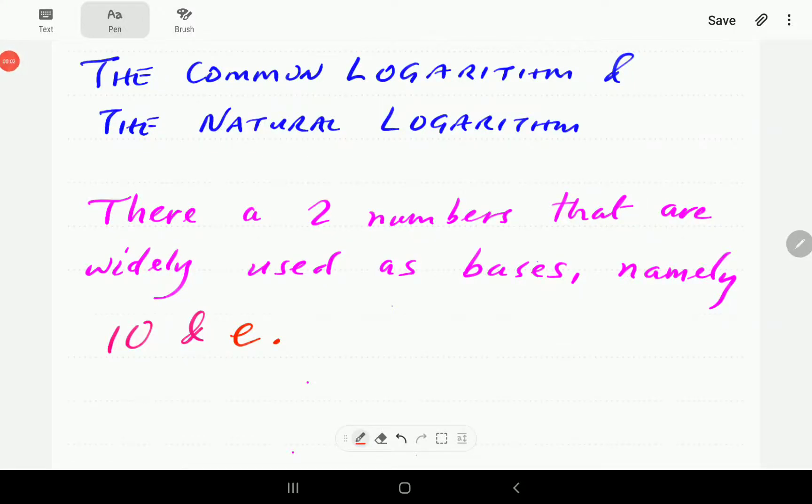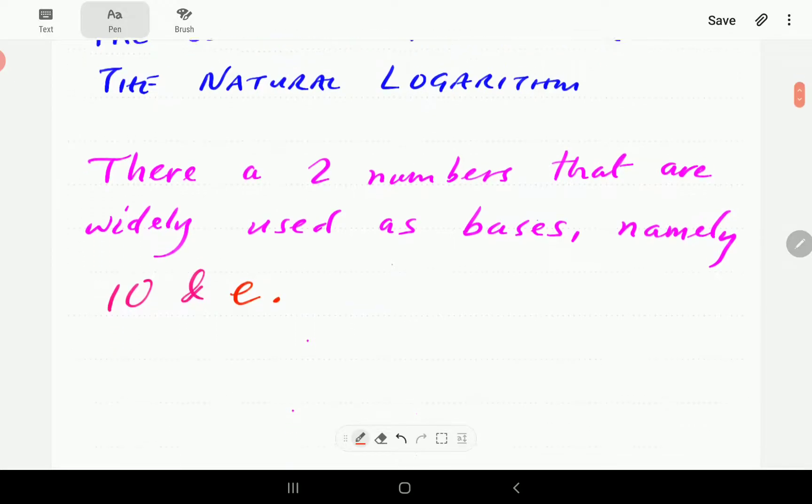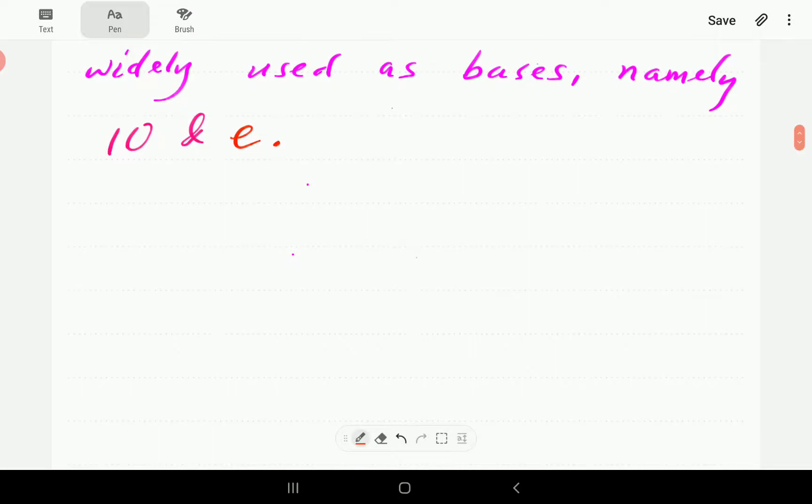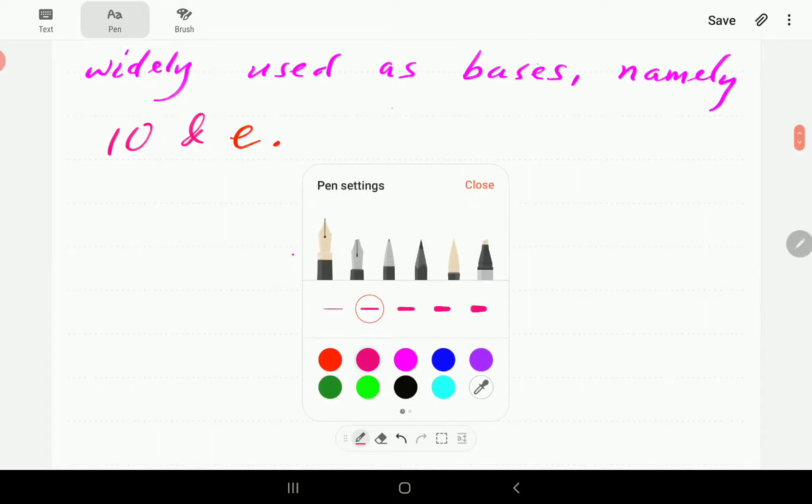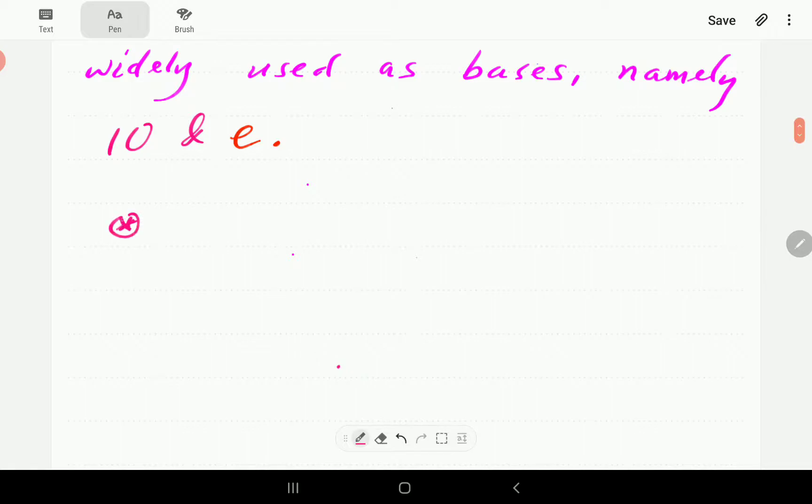In this video, we're going to look at two numbers that are used commonly or very widely as bases in the context of logarithms and exponential functions. These are 10 and the number e, which we shall introduce in a moment. The number 10 is called the common base in the context of logarithms.